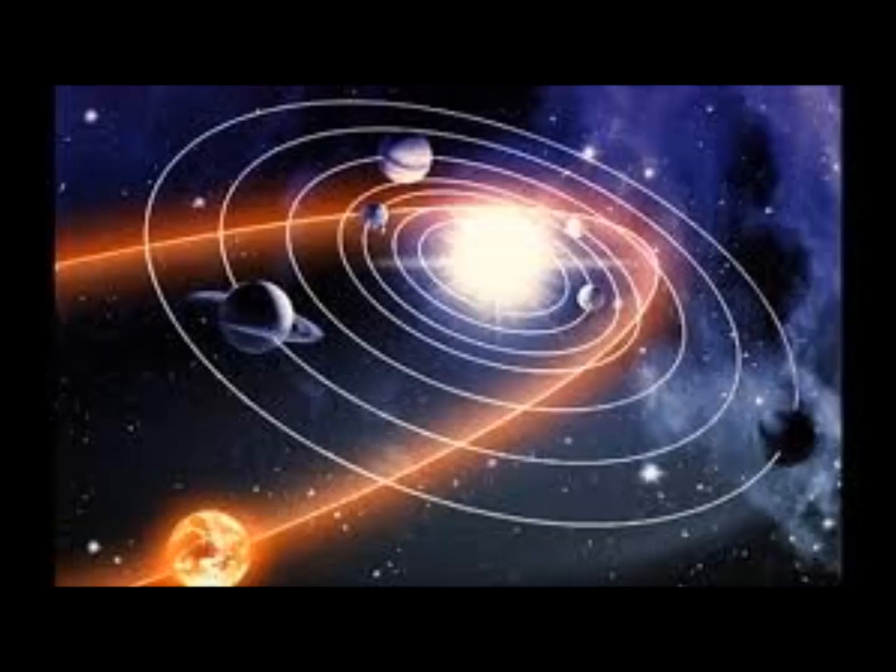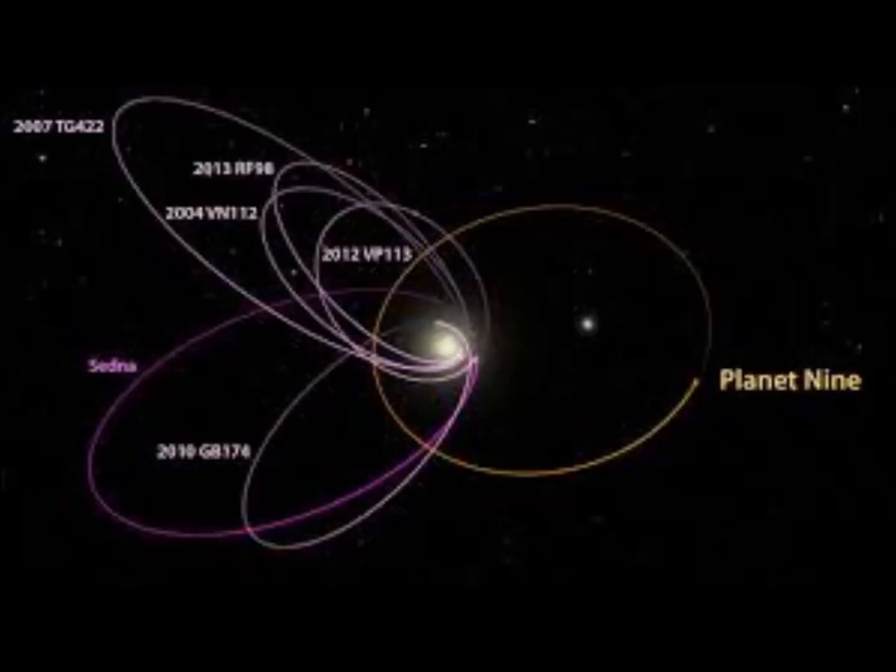The research team member Paul Kalas explains, it's as if we have a time machine of our own solar system going back 4.6 billion years to see what may have happened when our young solar system was dynamically active and everything was being jostled around and rearranged.